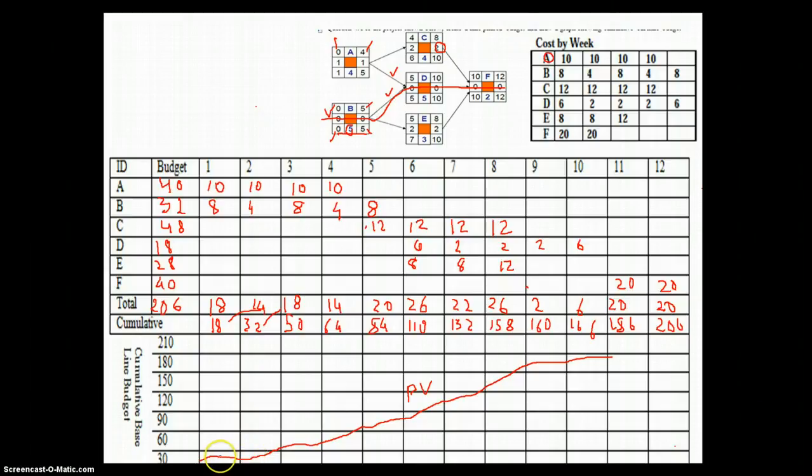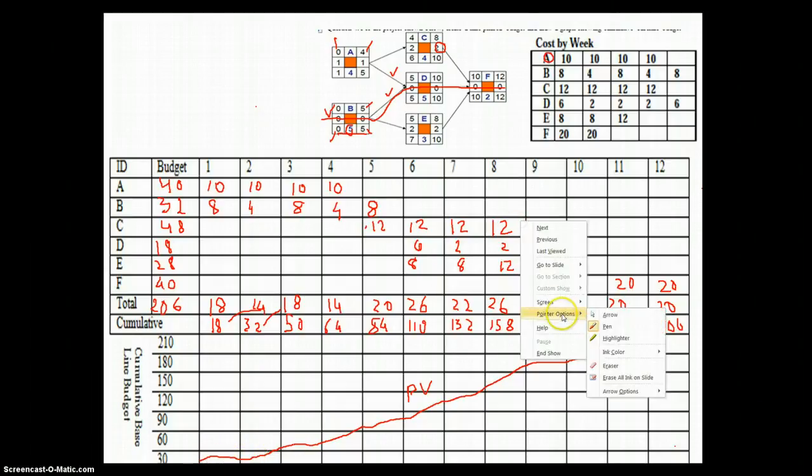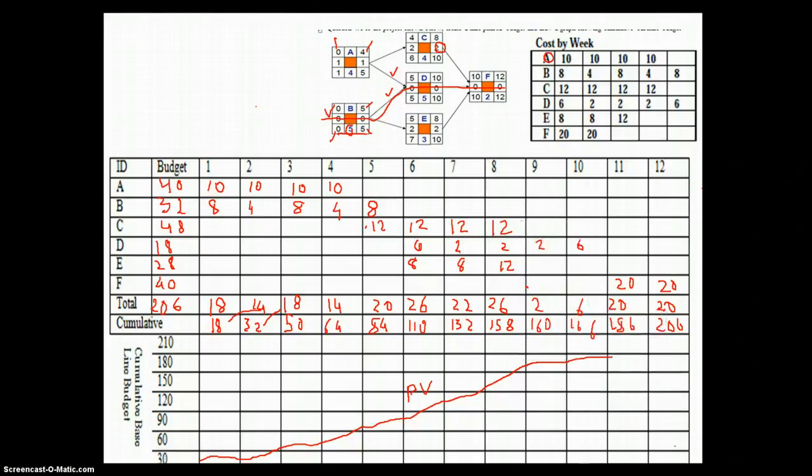So once you have got the actual spending data available, you could plot your actual spend line and see whether if your actual spending is below the planned value, it would indicate that you are underspending, and if it is above the planned value line, it would mean that you are overspending. Thank you.